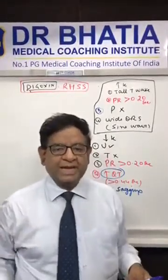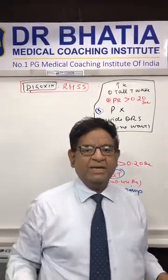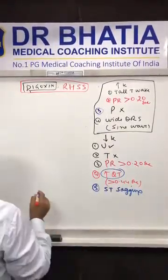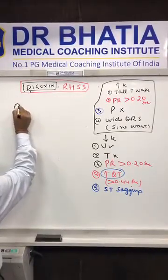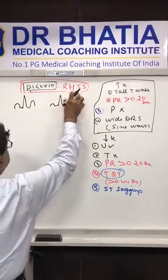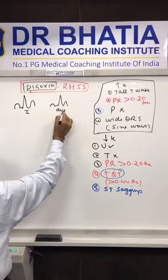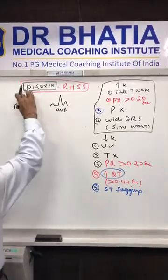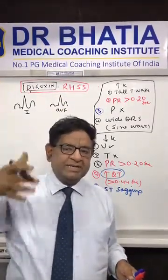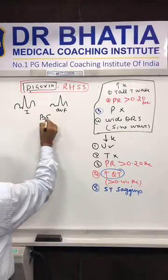Now we talk about axis deviation. This topic is not well known to most students, so we'll spend time learning the basic fundamentals. Let's take a lead — this is L1 and this is aVF. The R wave is upward here. Anything up is positive, anything down is negative. Let's learn the basic concept of axis deviation.